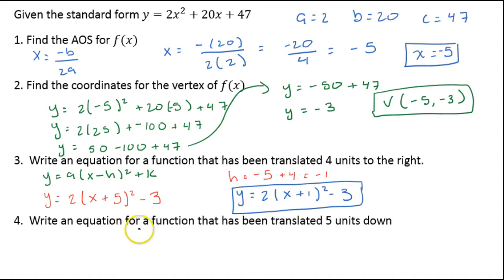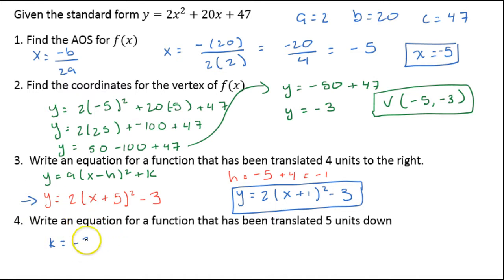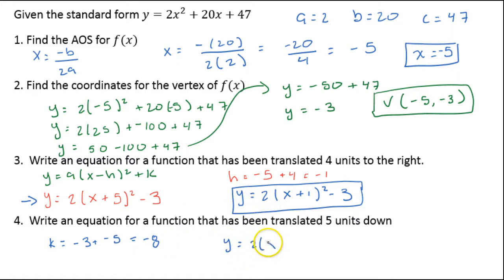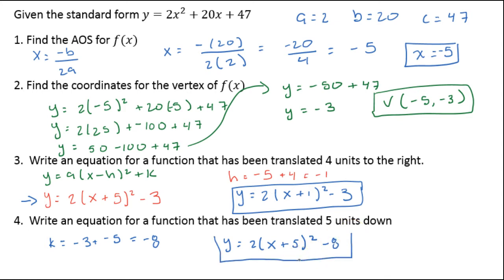Now let's do a translation of 5 units down. We know k is my vertical shift. From my original equation, k = -3. Translating 5 units down means adding -5, so -3 + (-5) = -8. Rewriting the entire function with original h, we get y = 2(x + 5)² - 8.